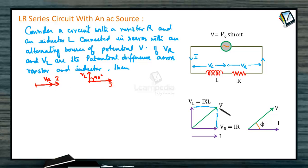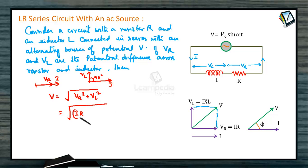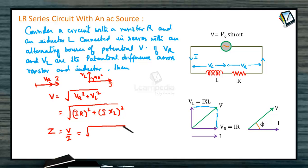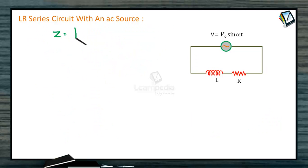Taking VR and VL in the phasor diagram, the supply voltage V = √(VR² + VL²) = √((IR)² + (I·XL)²). We can calculate the impedance Z = V/I, which gives Z = √(R² + XL²) = √(R² + (ωL)²). This is the impedance of the LR circuit.